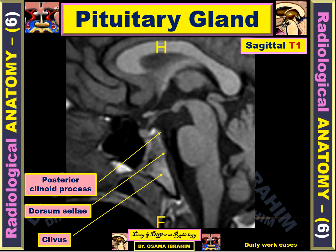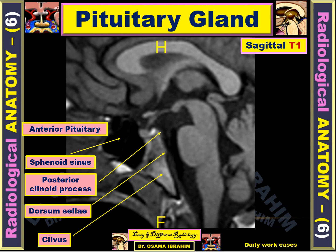The sphenoid sinus is the dark structure here. Now, where is the anterior pituitary? This is the entire pituitary gland within the sella turcica fossa, and the anterior part is the anterior pituitary gland. The posterior pituitary gland is represented by this bright structure on sagittal T1. This is the neurohypophysis, and this is the adenohypophysis.